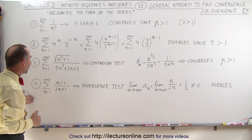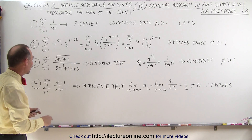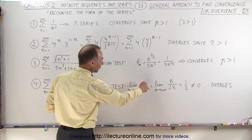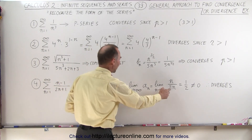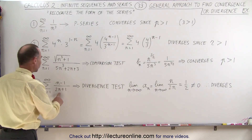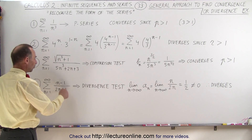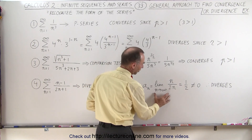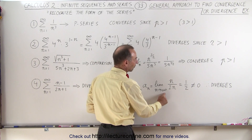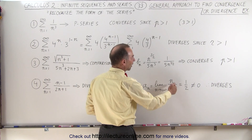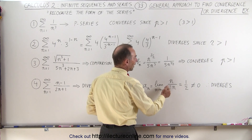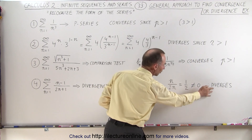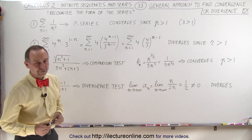On our fourth example we can do a divergence test. We take the limit as n approaches infinity of the terms. As n goes to infinity, the minus one and the plus one in the numerator and denominator are no longer significant, so we take the limit as n approaches infinity and we have n divided by 2n. In the limit the last term becomes equal to one half, which is not equal to zero, so therefore this series diverges.